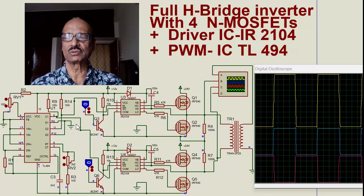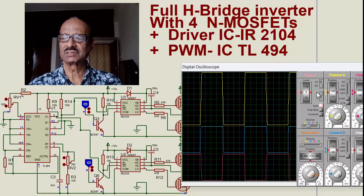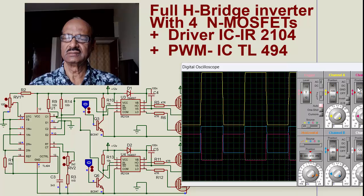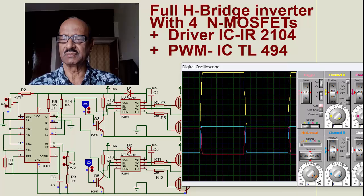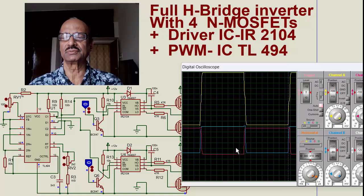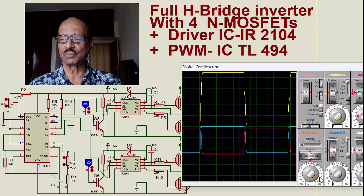The dead band control — if you can see this, you see what happens: if I shift the red, there is a time difference here. If I zoom in a little more, you can see it better — there is a time difference between switching on and switching off of one side versus the other. That is the advantage of this particular IC: it gives a dead band so that both of them will not be switched on at the same time.